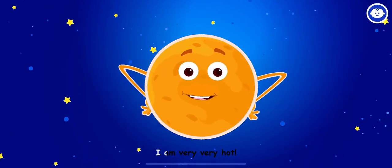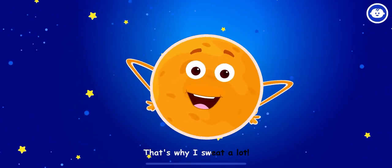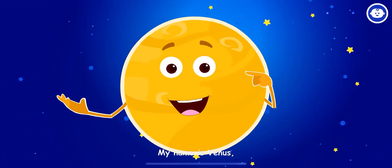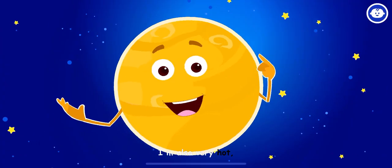I am Mercury, I'm very, very hot. The sun is nearest to me, that's why I sweat a lot. My name is Venus, I'm the brightest planet you'll see. I'm also very hot, don't come near me.